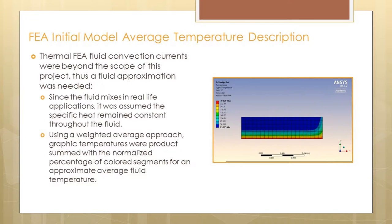Our model didn't include convection currents, so to compensate for this actual phenomenon, we took a graphical weighted average of the temperature gradients. To do this, we product summed the percent of color segment with the temperature in a specific region, which allowed us to insert a mixed fluid temperature for our calculations.